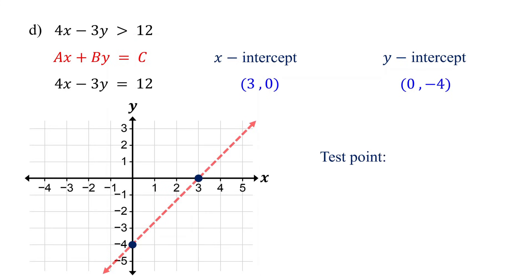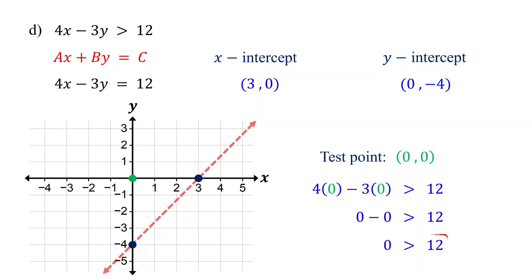Next, pick a test point that is not on the line to determine which region to shade. You can use the point 0 comma 0. Substituting it into the inequality and simplifying gives 0 greater than 12, which is false. So shade the region that does not contain the test point. That's your graph.